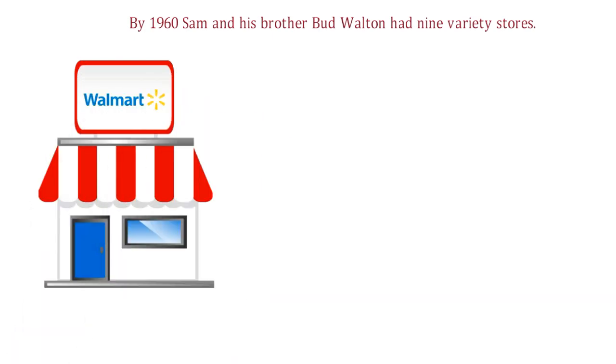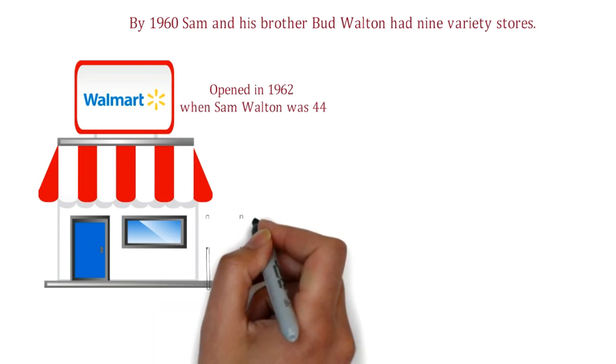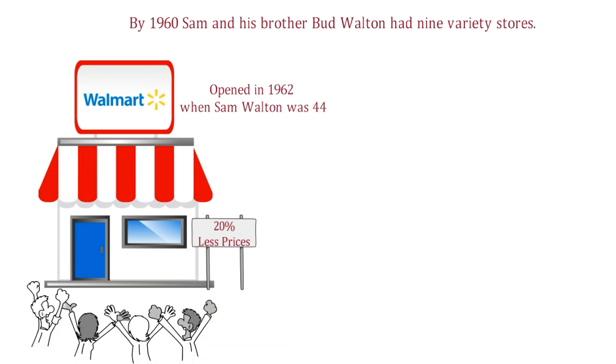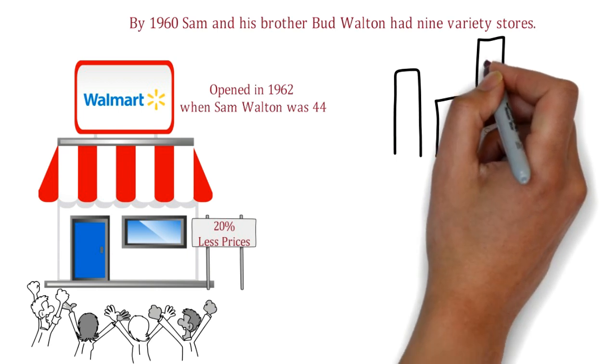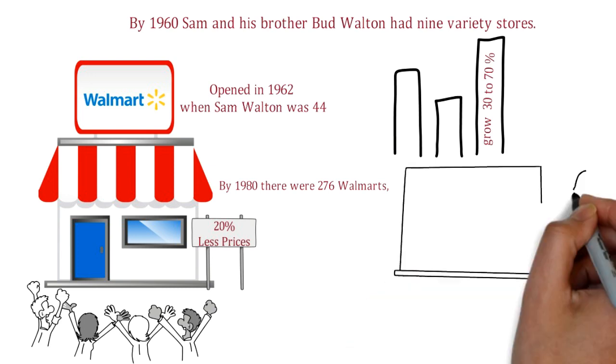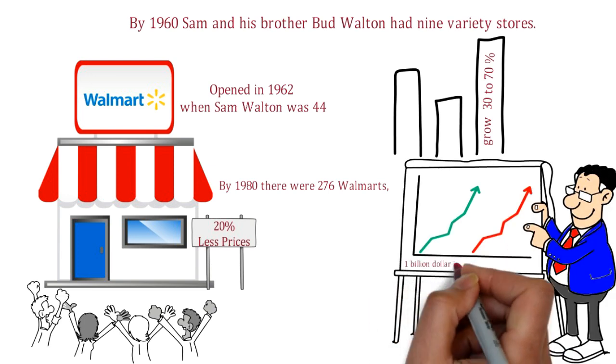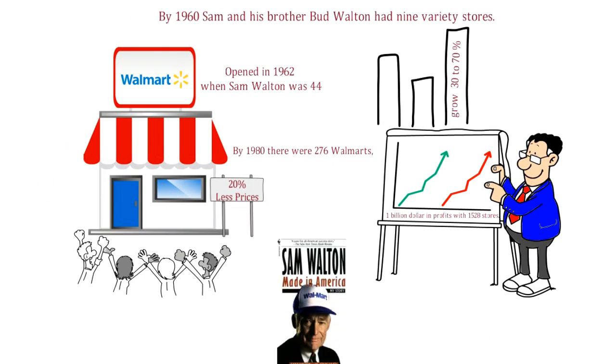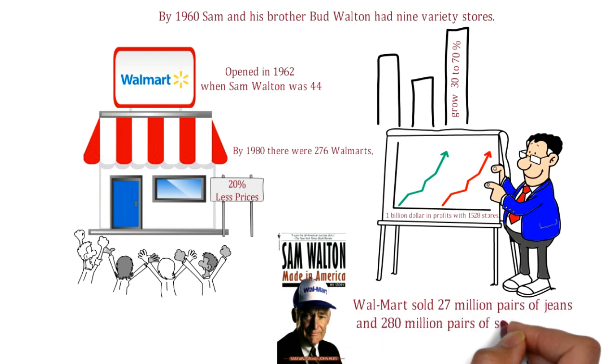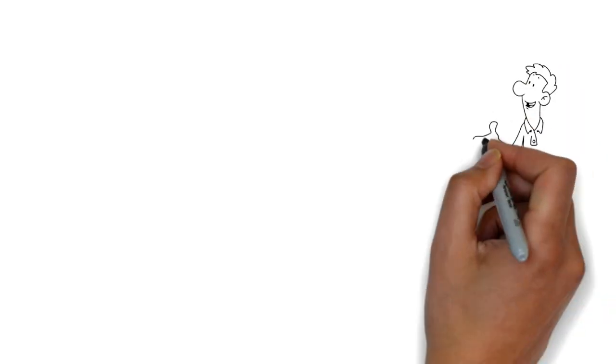The first stores were plain and chaotic, but prices were generally 20% less, and this alone attracted customers. With improved distribution, they'd found a way to grow at 30 to 70 percent a year. By 1980, there were 276 Walmarts, and by 1990 the company hit 1 billion dollars in profits with 1,528 stores. In the year Walton wrote Made in America, Walmart sold 27 million pairs of jeans and 280 million pairs of socks, enough for every man, woman, and child in the USA.